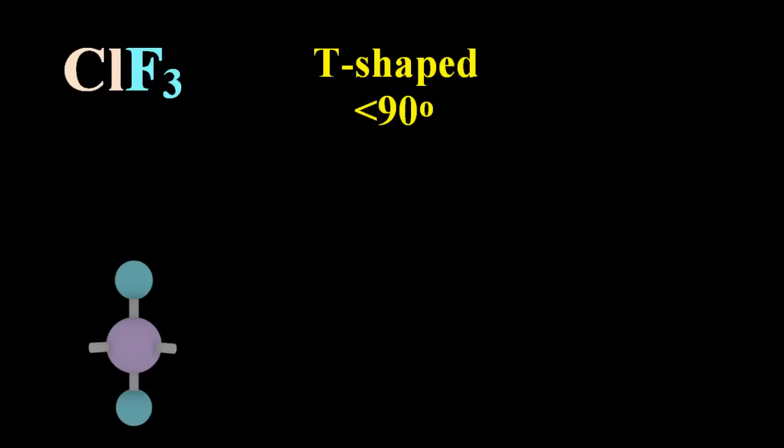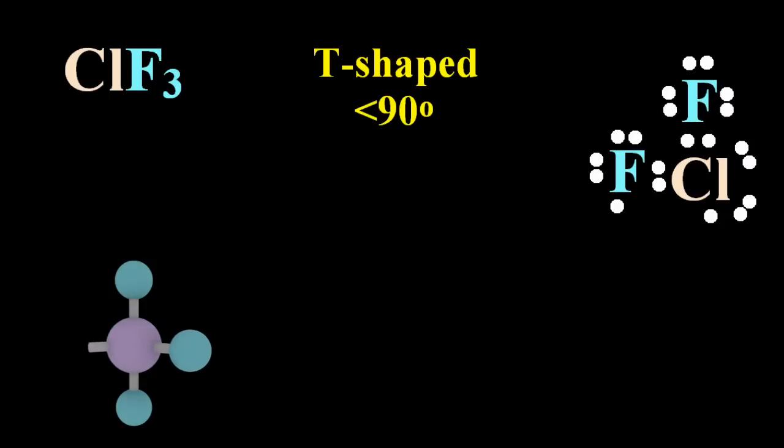Next up is chlorine trifluoride. Apparently this is really nasty stuff, and you can see that that's T-shaped. So we're getting chlorine in the middle, surround it with the three fluorines, and leave a little gap for those two lone pairs.